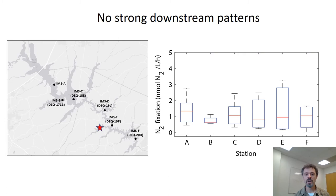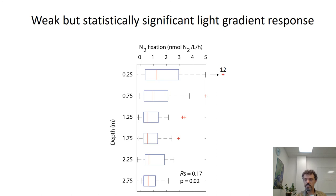Here are some results. These box plots show nitrogen fixation at the six different stations oriented from upstream to downstream, left to right. All these rates were very low, and there was no strong downstream pattern of nitrogen fixation. As expected, there was a light response — incubation depths ranged from about 50 percent of incident light at the shallowest depth down to about one percent of irradiance at the bottom — showing a weak but statistically significant light gradient, as expected since nitrogen fixation relies on products of photosynthesis.